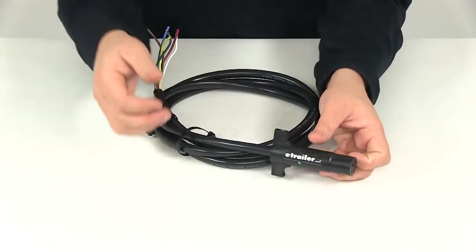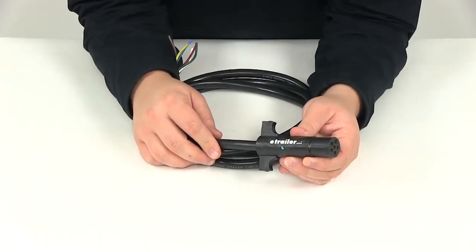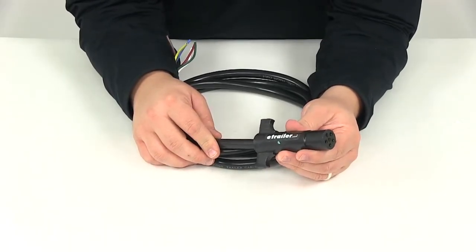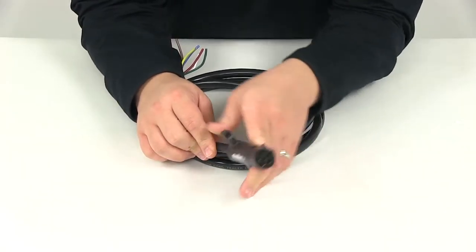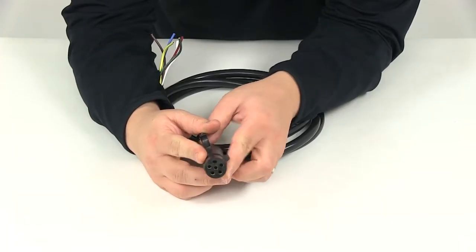Today we're taking a look at part number 50-61-108. This is the Bargeman six-way molded connector for the trailer end, providing your six-way molded connection.